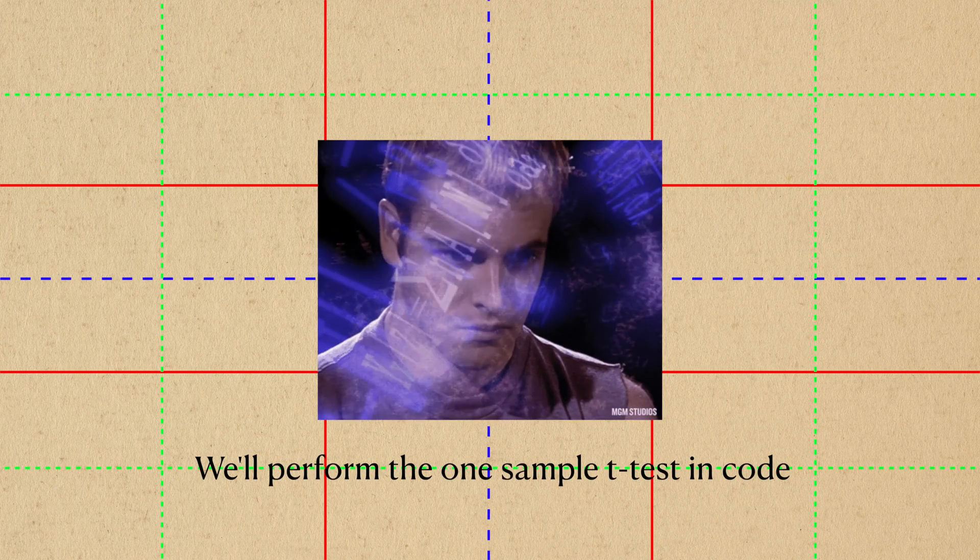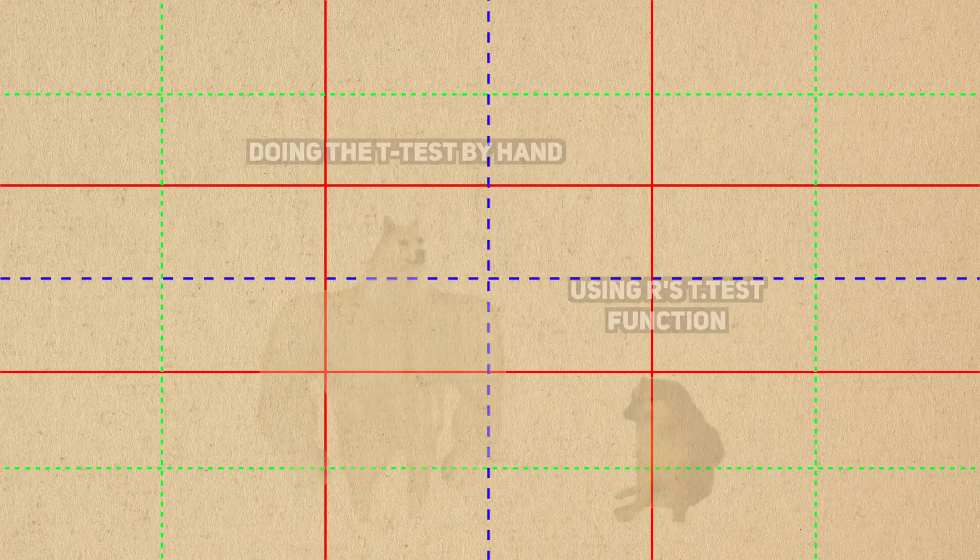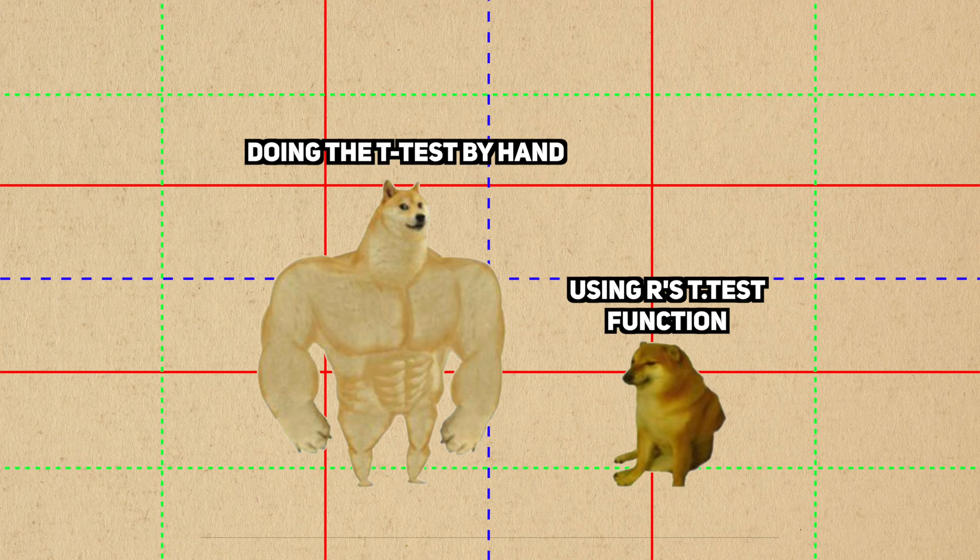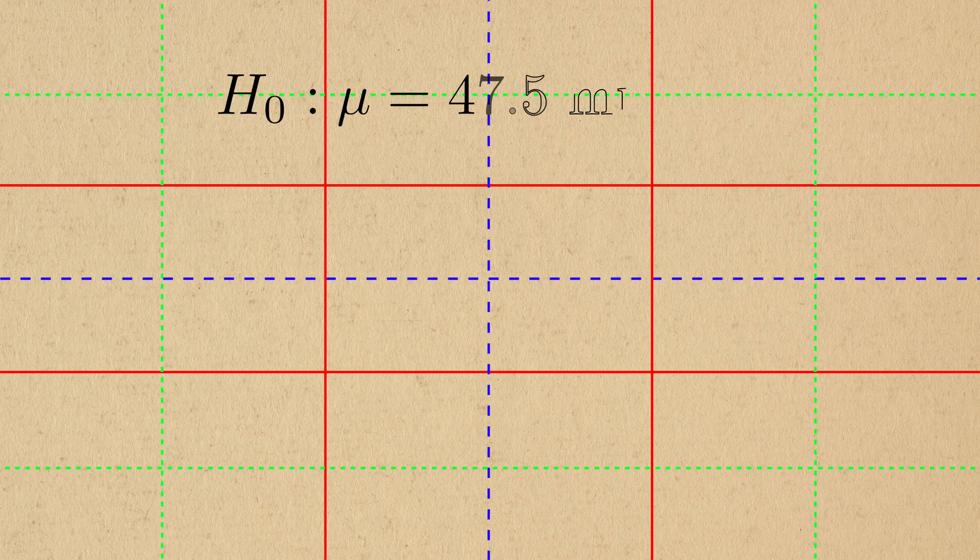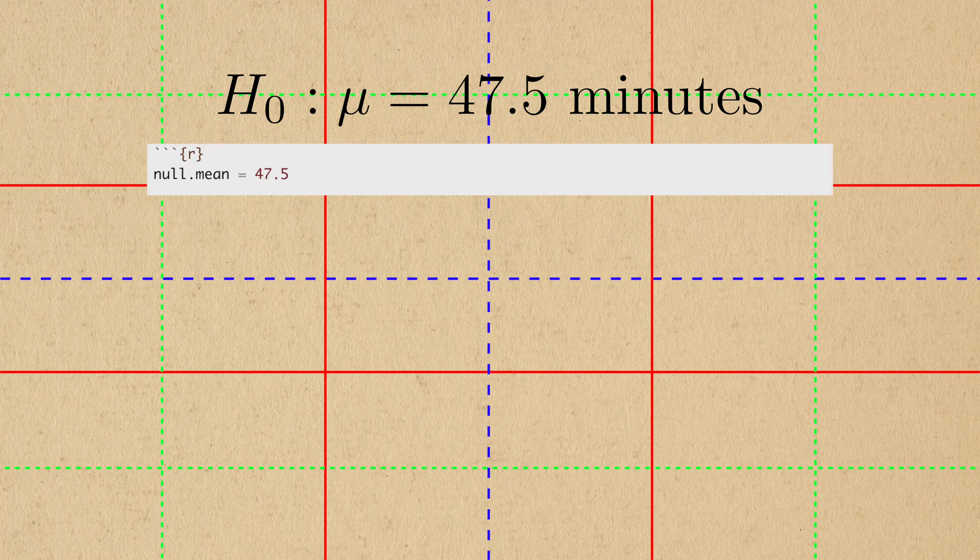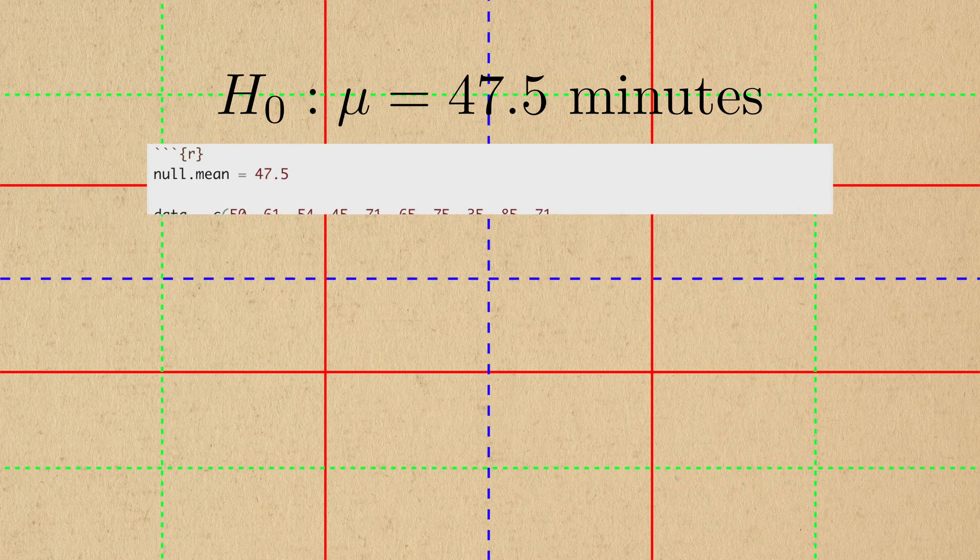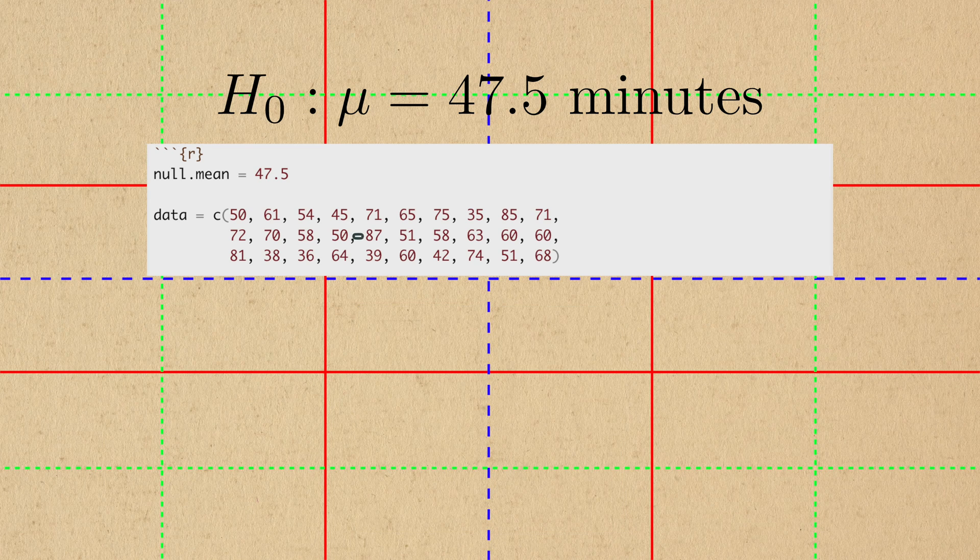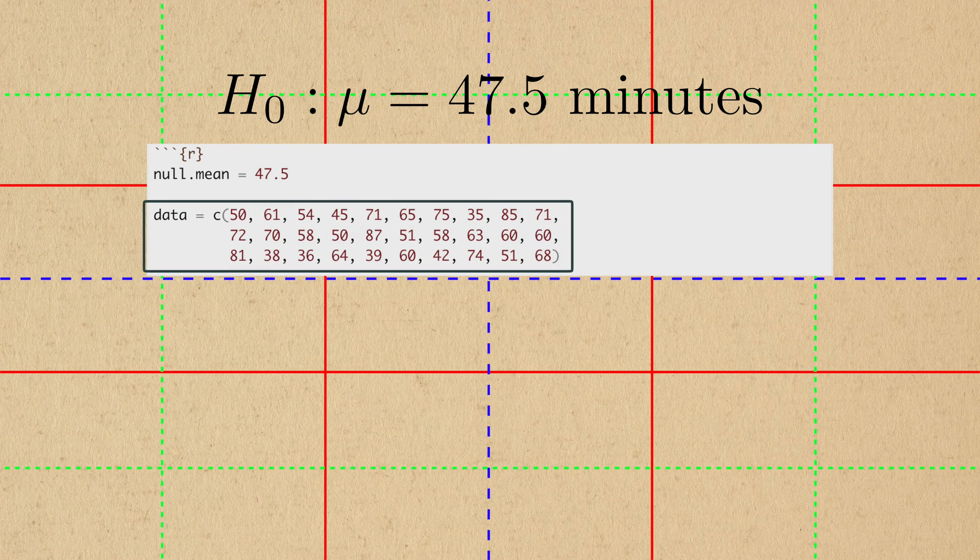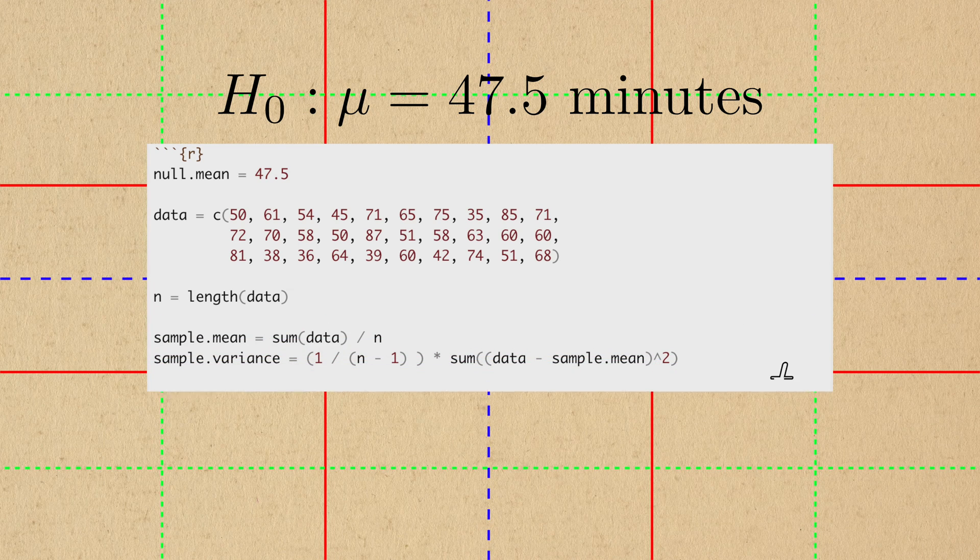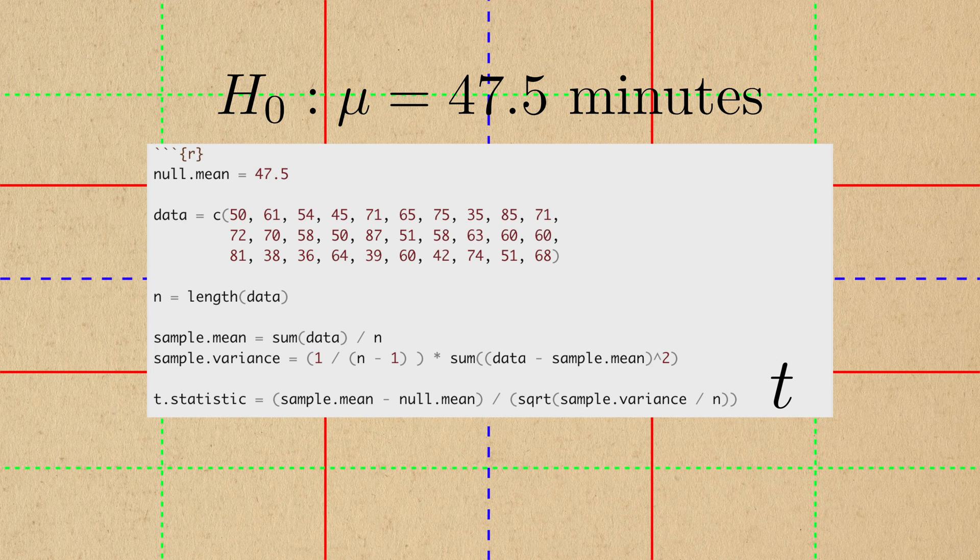We'll actually perform a one-sample t test using code. But instead of actually using the t test function in R, we'll do it by hand. I'm trying to test the null hypothesis that the average time someone watches YouTube in 2023 is 47.5 minutes. I went out and asked 30 people how much YouTube they watch in a single day, which is what this array of numbers represents. Using this data, I'll first calculate the sample mean and sample variance, and then use these to construct my t statistic.